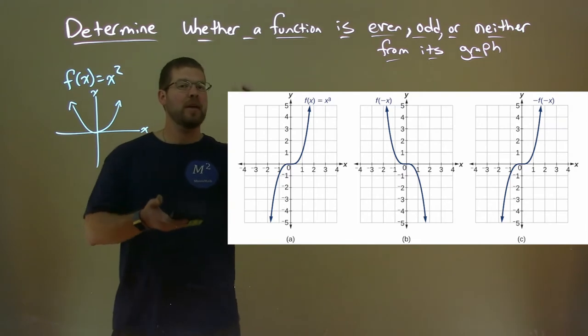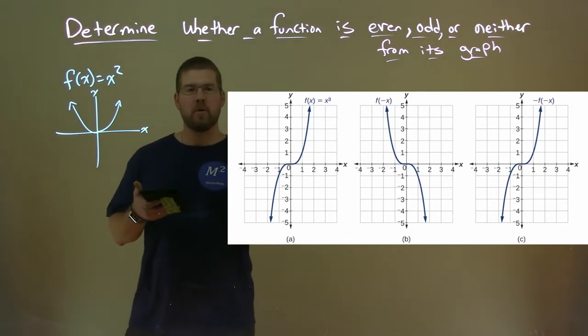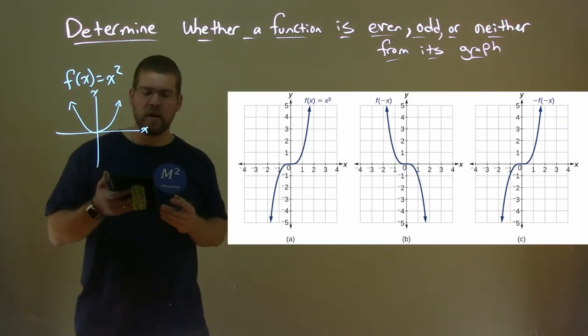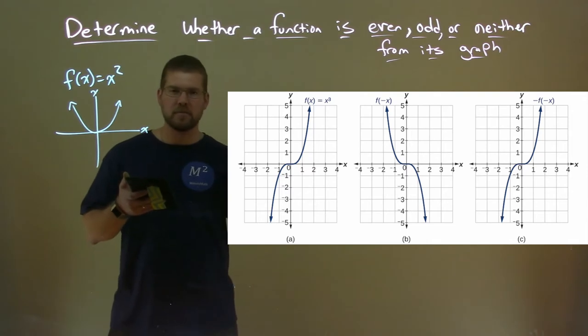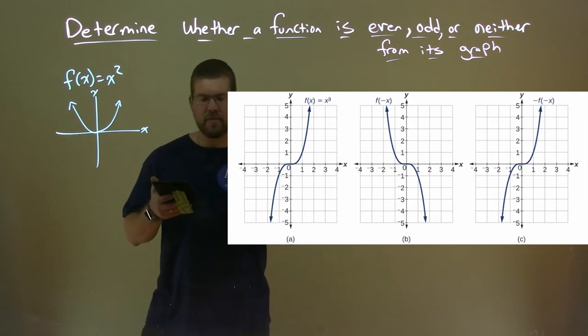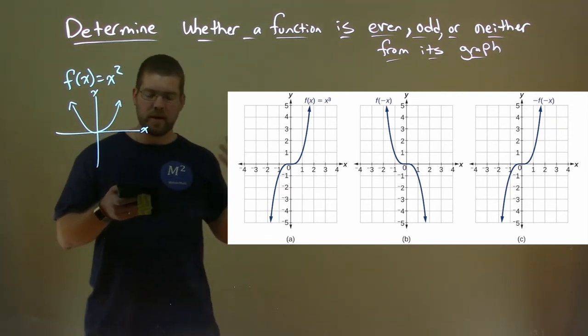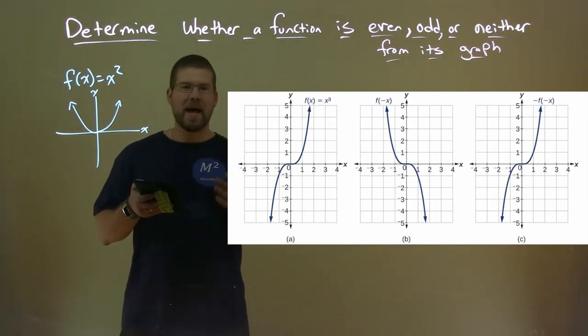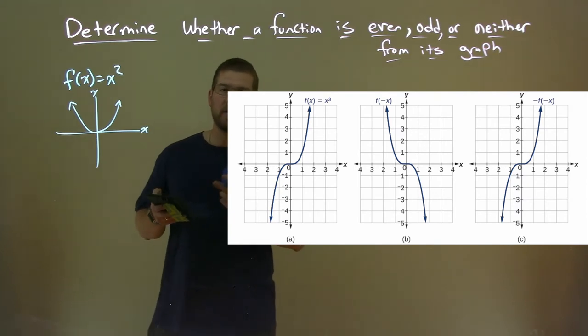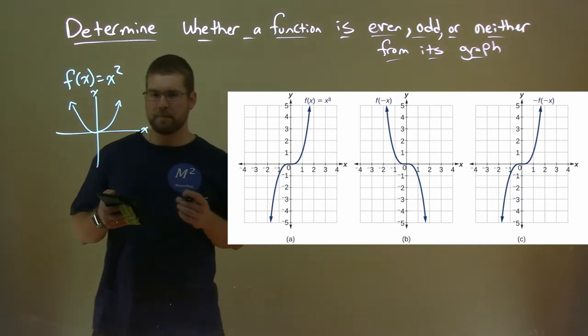Then we reflect again over the x-axis, so doing both the y and x-axis, and we get the function again. The same graph—part c and a are the same. Negative f of negative x is the same as f(x). When that happens, we have an odd function.